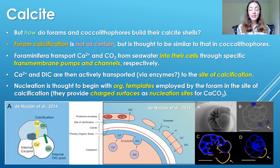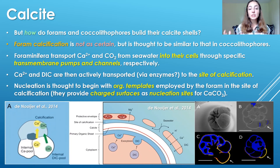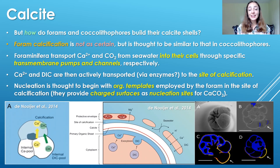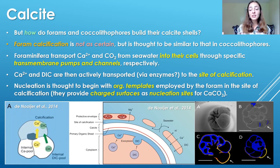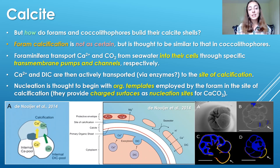Forams are thought to transport calcium ions and CO₂ from seawater into their cells through specific transmembrane proteins acting as pumps and channels. The Ca²⁺ and DIC — dissolved inorganic carbon or CO₂ — are then actively transported, probably via transport enzymes, to the site of calcification. Nucleation is thought to begin with organic templates acting as nucleation surfaces. The main difference from coccolithophores is that forams probably use CO₂ rather than bicarbonate, because CO₂ is not a limiting nutrient for them since they don't photosynthesize.